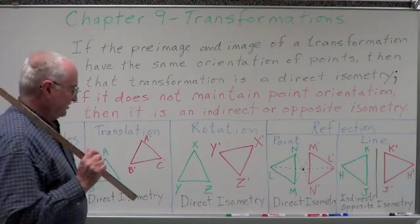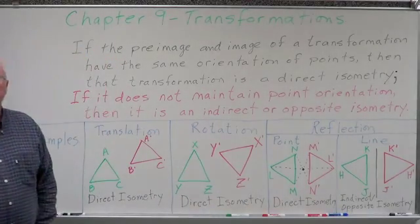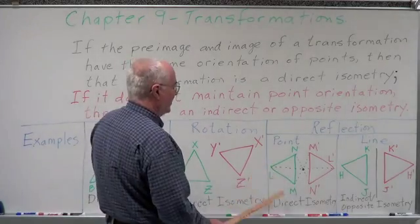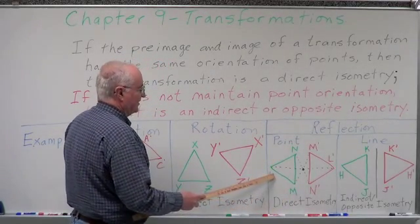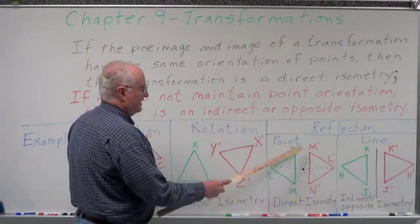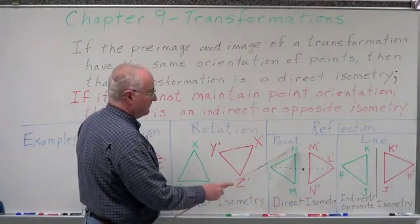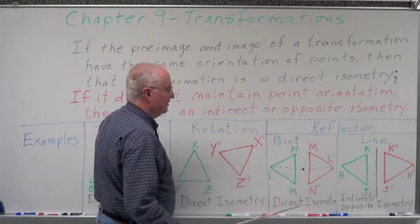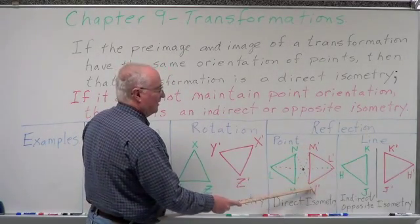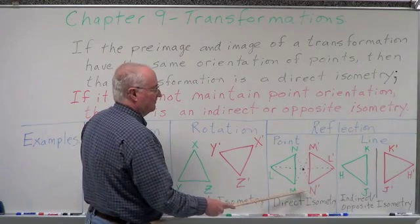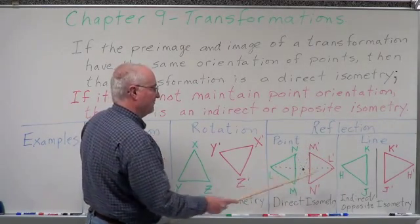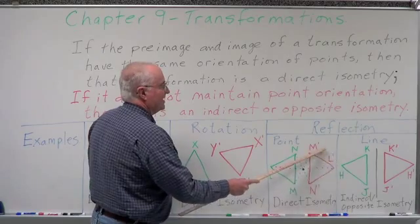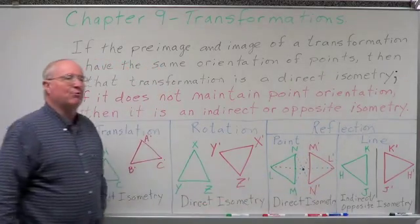Now let's look at reflections — there are two types: point reflection and line reflection. For point reflection, I have triangle L, M, and N. Going to the left I have L, then M, then N. Reflecting across a point, L comes across, N changes from up to down, and M goes from down to up. Going to the left on the image, I still have L prime, M prime, N prime — so it maintains point orientation.